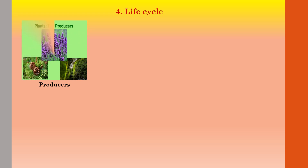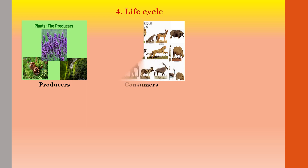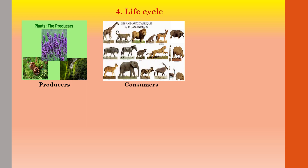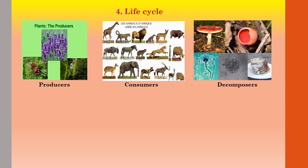The fourth criteria is based on lifestyle or life cycle. According to this, organisms are categorized into three groups: first, producers — for example, plants; second, consumers — which includes all animals; and third, decomposers — those organisms which feed on dead and decaying organic matter.